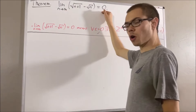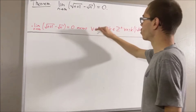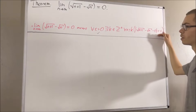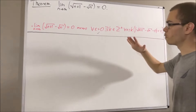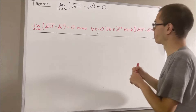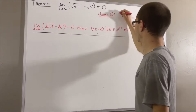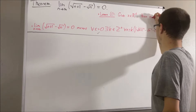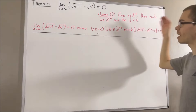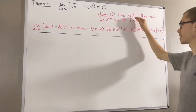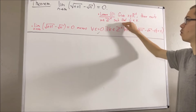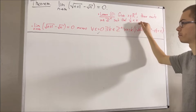So to prove this, all we want to do is prove that this statement is true. In the proof, we're going to use the following preliminary result: given any positive real number x, there exists a positive integer m, such that 1 over m is less than x.